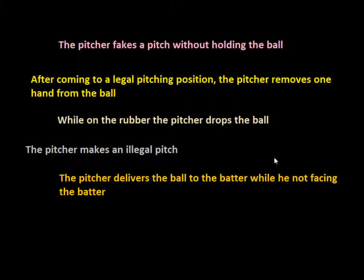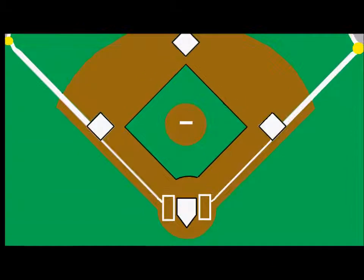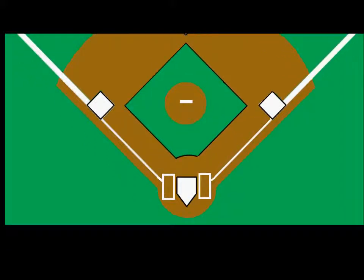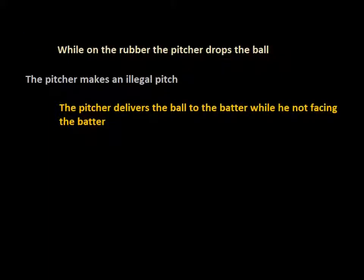This is probably a rare situation, but it's something to put in there. The pitcher would not be allowed — for example, if there's a runner on second base — to be looking at that runner and then somehow throw the ball backwards. I don't know how he would pull that off with any accuracy, but just to make sure, we have this rule that he must be facing the batter when he delivers the pitch.